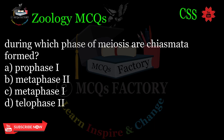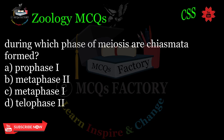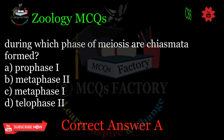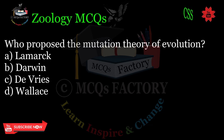During which phase of meiosis are chiasmata formed? A. Prophase. B. Metaphase. C. Metaphase. D. Telophase. Correct answer: A.